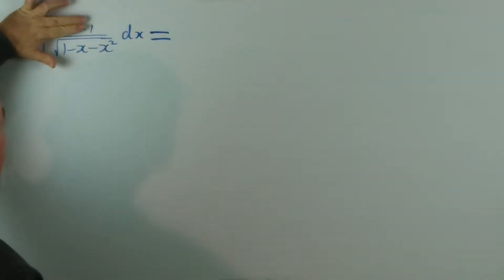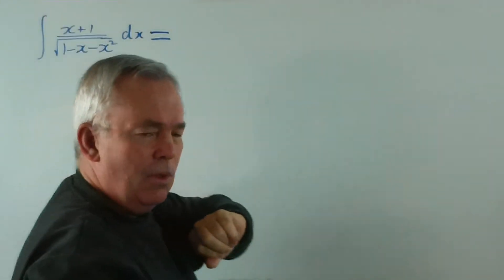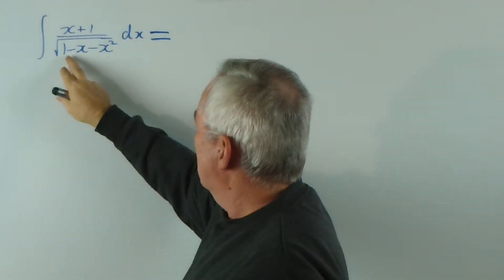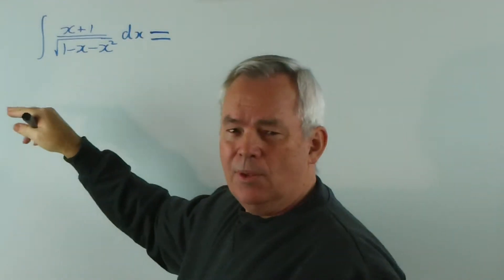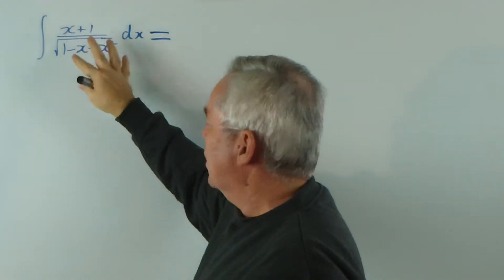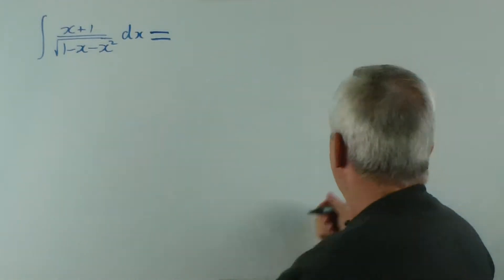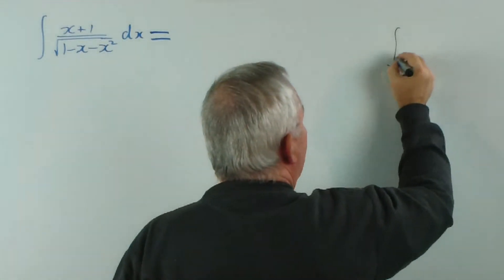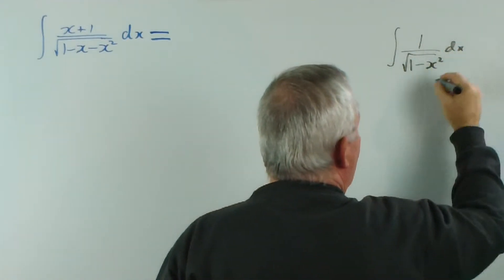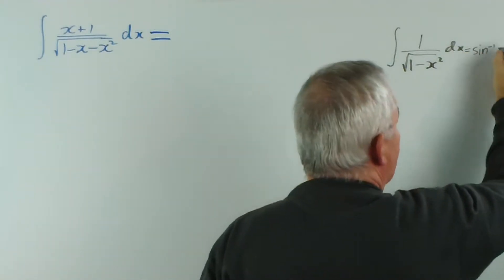If the x wasn't here, this structure at the bottom, the square root of some quadratic, you can see that by completing the square, we could conceivably end up with some constant minus a function of x squared and have a structure that would give us an inverse sine function. That gives us the inverse sine or arc sine of x.